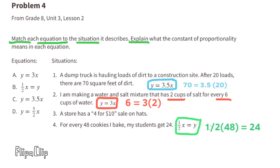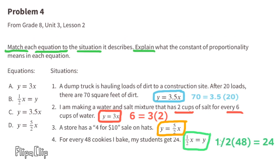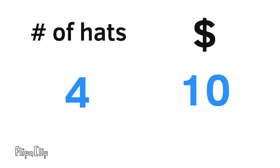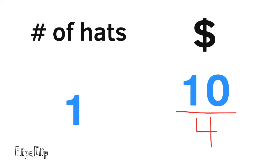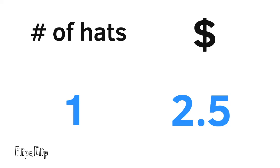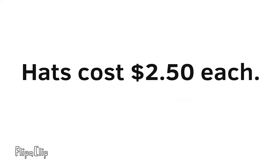Equation D matches situation 3: a store has a 4-for-$10 sale on hats. When there are 4 hats the price is $10. Dividing both by 4 gives 1 hat for $2.50, meaning hats cost $2.50 each.